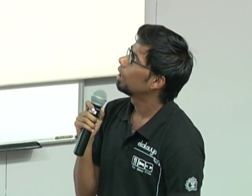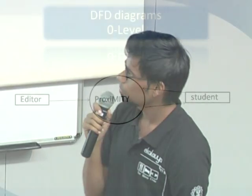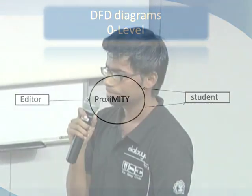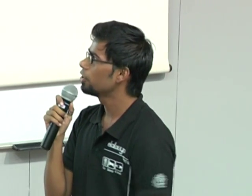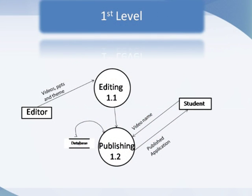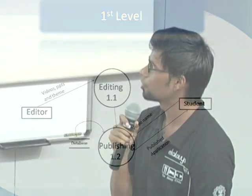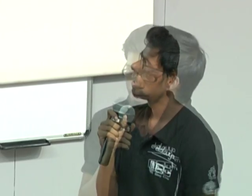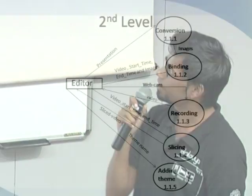Next, there is a DFD with two entities: editor and a student. The editor can give the videos, PPT, and images to the editing tool, and the published structure goes to the database as a published structure. The student can search by video name and view the published application. This is a second-level DFD.